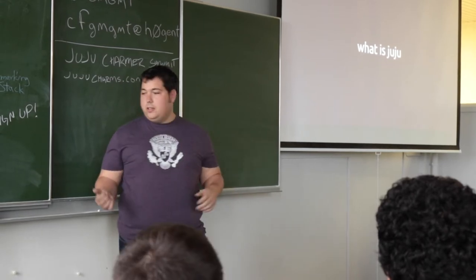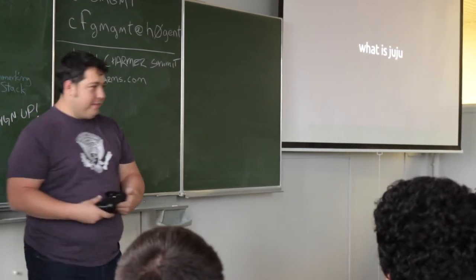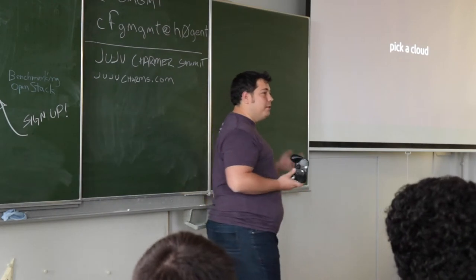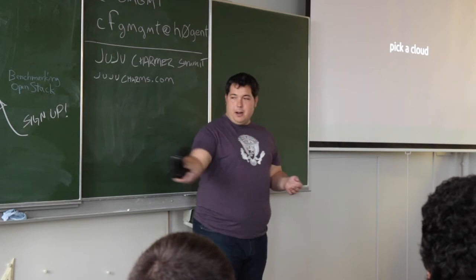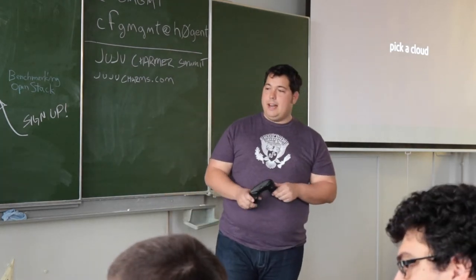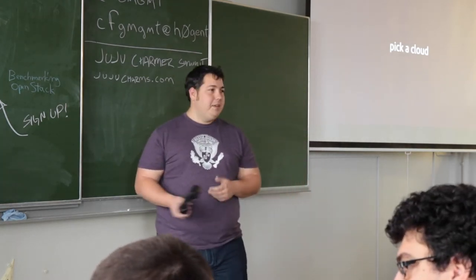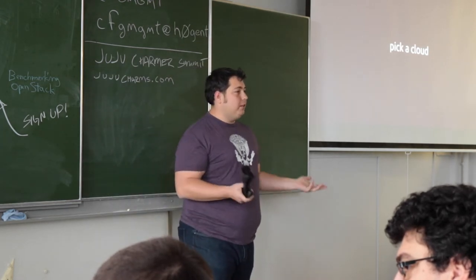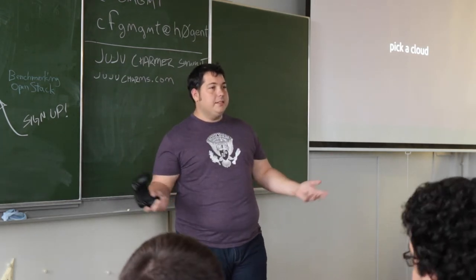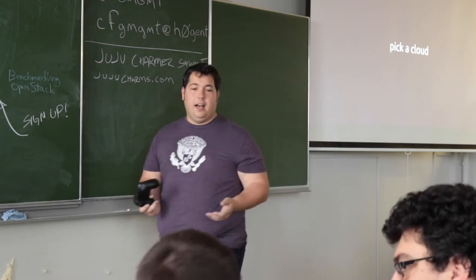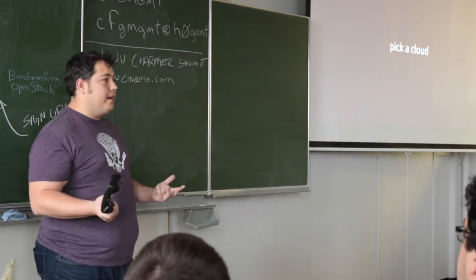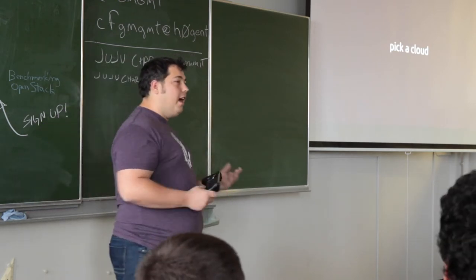Juju's application modeling works against almost any cloud you can imagine. Bare metal is a cloud — it's just a rack, a data center. A lot of people still run bare metal. But Juju also works against a myriad of cloud providers: Google Compute Engine, Azure, Amazon Web Services, Rackspace, and more. If you have a data cloud, come talk to us afterwards. Really at the end of the day, Juju can work against any machine you have SSH access to.